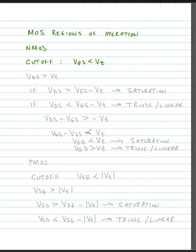For gate-to-source voltage greater than the threshold voltage, we have to check to see if the gate-to-source voltage minus the threshold, if the drain-to-source voltage is greater than the gate-to-source voltage minus the threshold.